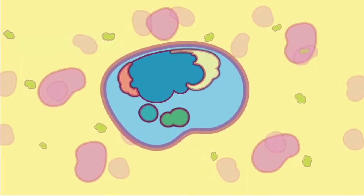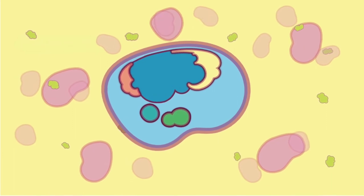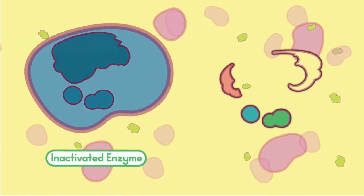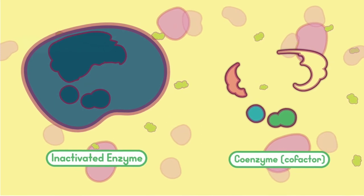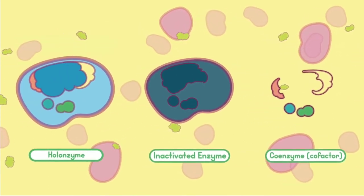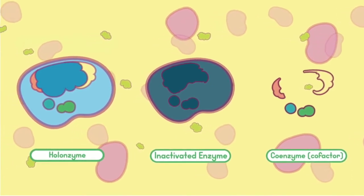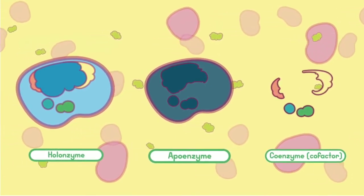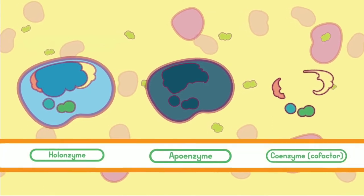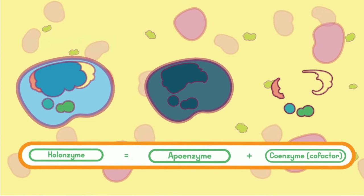Many enzymes only perform their catalytic role when associated with a coenzyme. An inactivated enzyme (protein), along with its coenzyme (non-protein), makes up a system called holoenzyme. To add to the complexity, scientists termed this inactivated enzyme as apoenzyme. And therefore, the equation becomes: holoenzyme equals apoenzyme plus coenzyme.